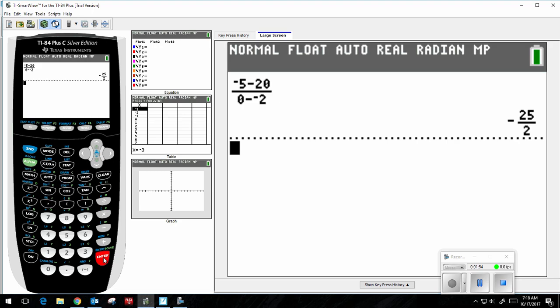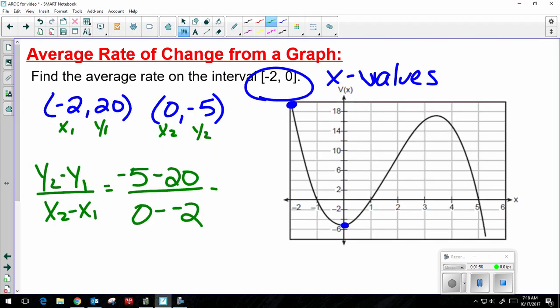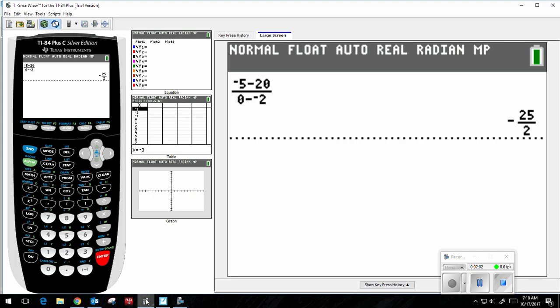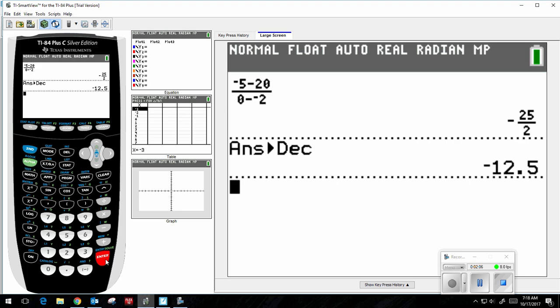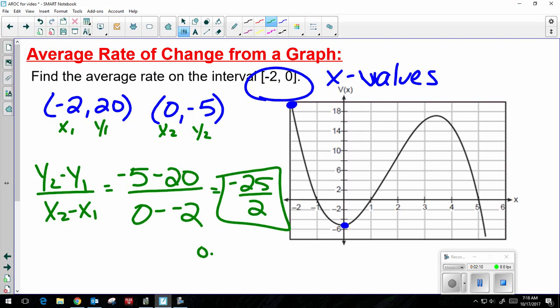And I get negative 25 over 2, which is an acceptable answer. Or, if you wanted to, you could hit math, decimal, and it will give you it as a decimal, negative 12.5. And either answer is acceptable. So that's from a graph.